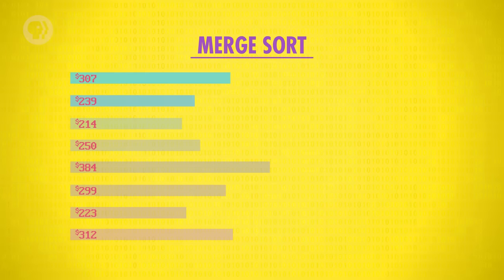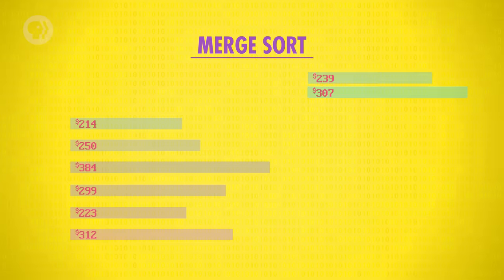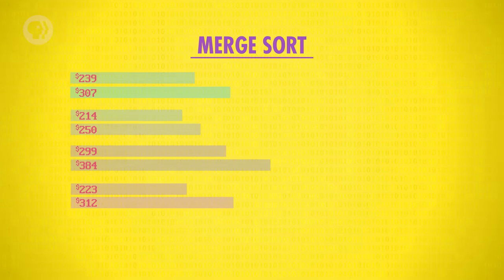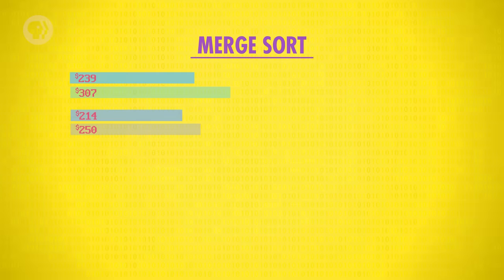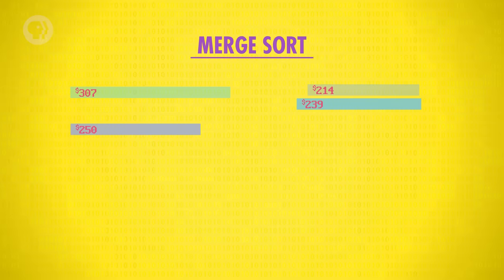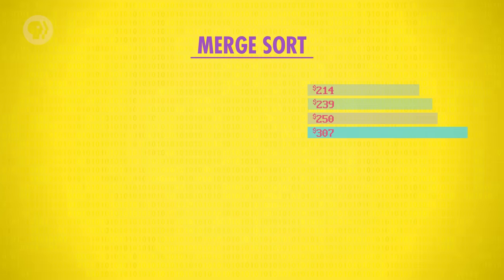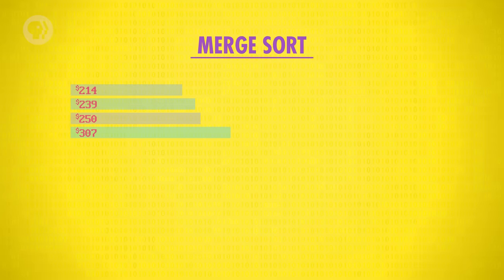Starting with the first two arrays, we read the first and only value in them — 307 and 239. 239 is smaller, so we take that value first. The only number left is 307, so we put that value second. We've successfully merged two arrays. We repeat this process for the remaining pairs, putting them each in sorted order. Then the merge process repeats — we take the first two arrays and compare the first numbers: 239 and 214. 214 is lowest, so we take that number first. Then we look at 239 and 250 — 239 is lower, so we take that next. Then 307 and 250 — 250 is lower. Finally we're left with just 307. In every case, we start with two arrays, each individually sorted, and merge them into a larger sorted array.